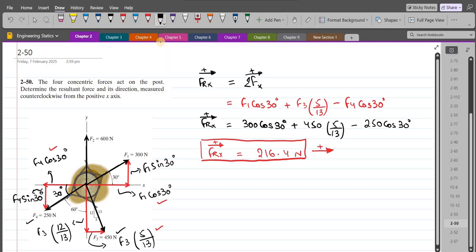Now we have to do the same for the vertical component of the resultant force. So we have FRy. I am considering the up direction as positive. This equals summation of forces in y direction.